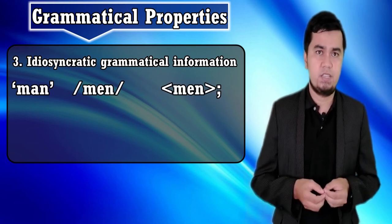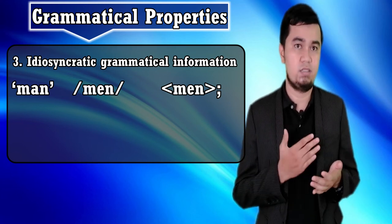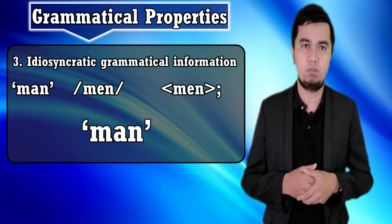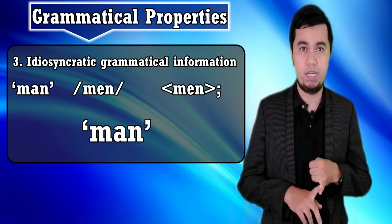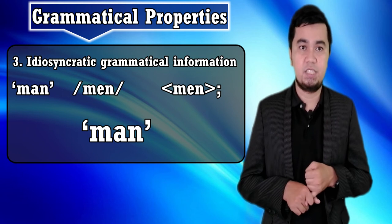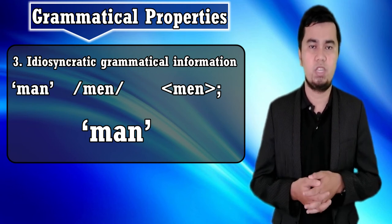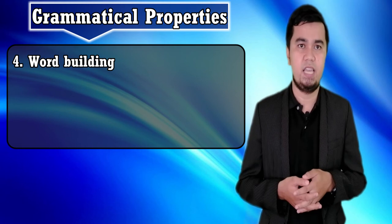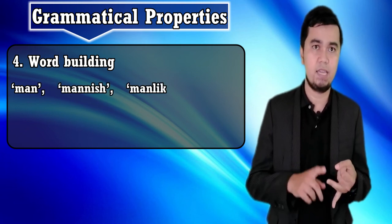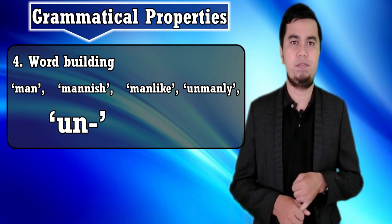Next is idiosyncratic grammatical information. The plural spoken form of 'man' is 'men,' written as 'men' — an exception to the usual rule of forming noun plurals by adding 's.' In addition, the noun 'man' can be either countable, as in Robert Burns' 'a man's a man for a' that,' or uncountable, as in Alexander Pope's 'the proper study of mankind is man,' depending on the sense in which it is used. In word building, there is a whole family of words related to 'man,' such as 'mannish,' 'manlike,' and 'manly,' made by prefixes and suffixes added to the stem 'man.'